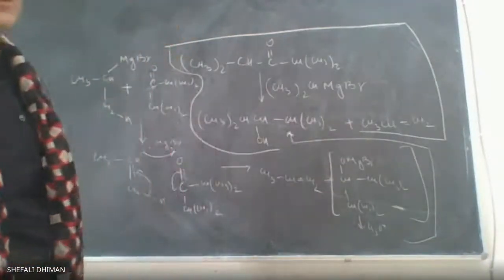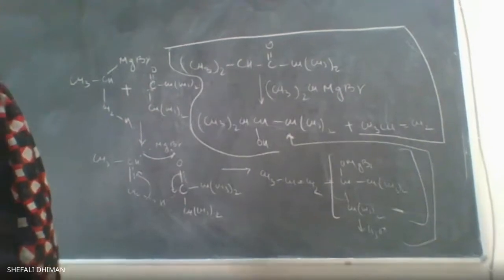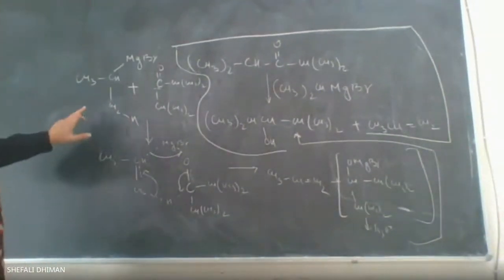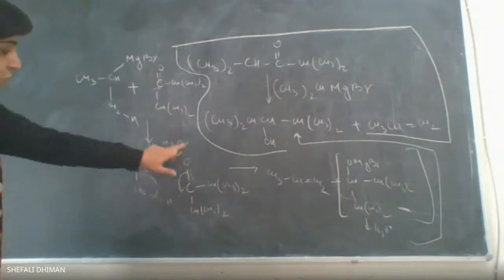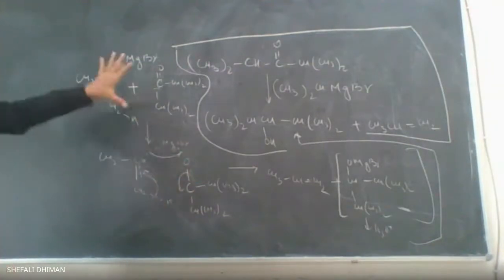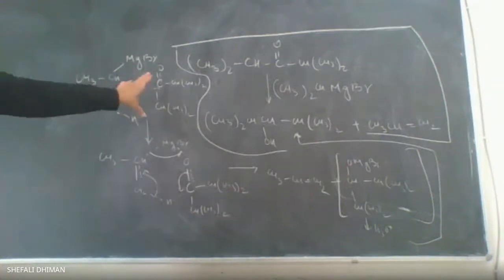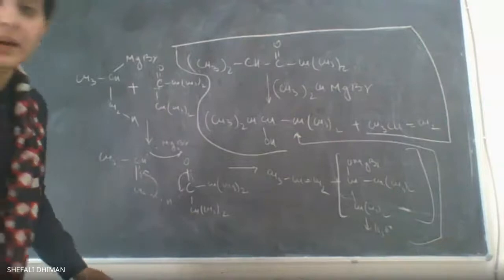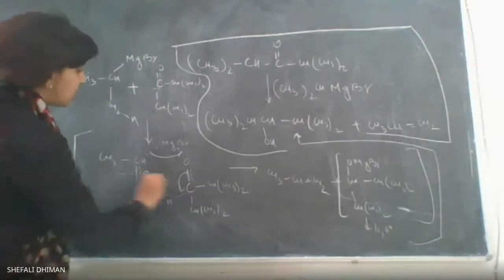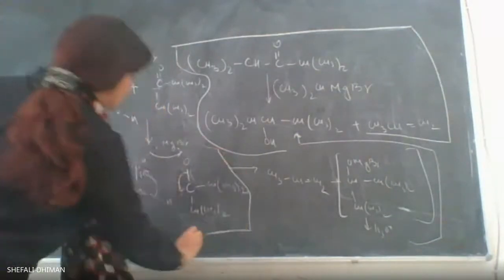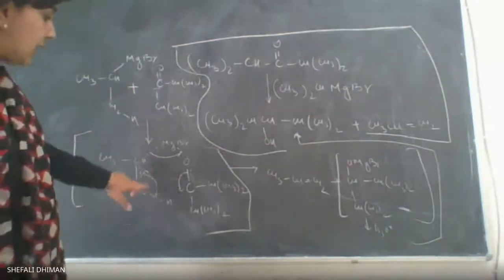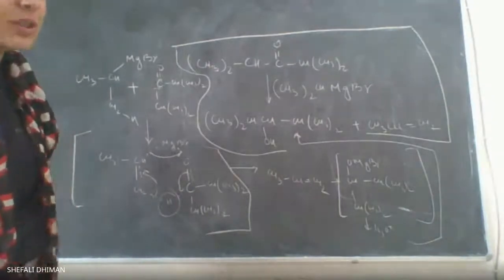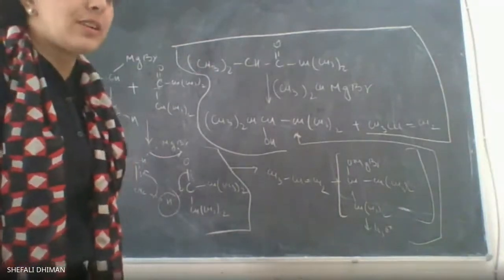When we study the mechanism of this reaction, it reveals that there is formation of a six-membered cyclic transition state. The Grignard reagent and its reaction with the substrate form a six-membered cyclic transition state, within which there is a transfer of hydrogen as a hydride.